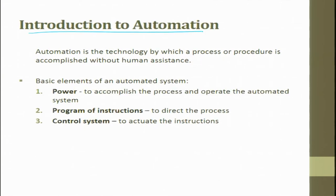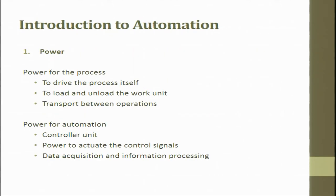Automation is a technology by which a process or procedure is accomplished without human intervention or assistance. There are three elements of an automated system: power, program, and control. Power accomplishes the process — driving the process, loading/unloading work units, and transporting between operations — as well as powering the control unit, data acquisition, and information processing.